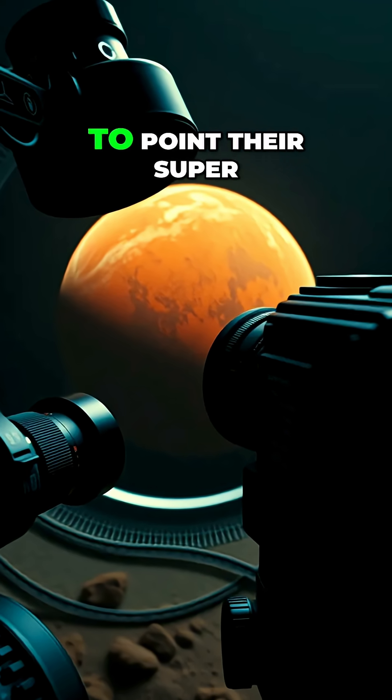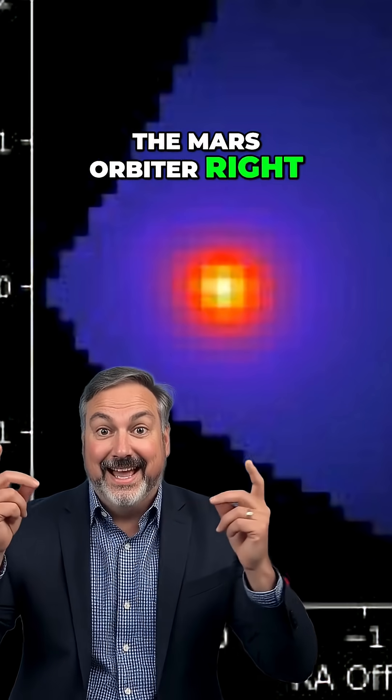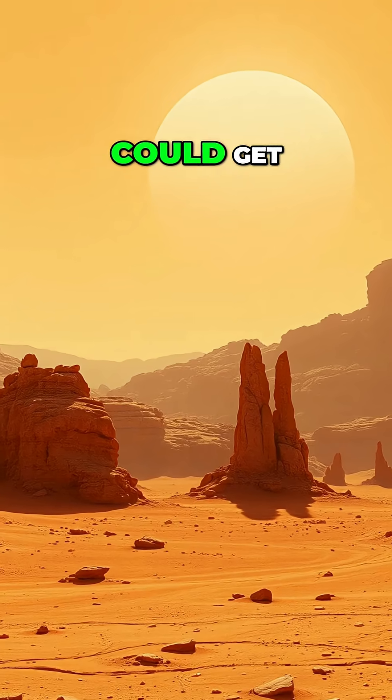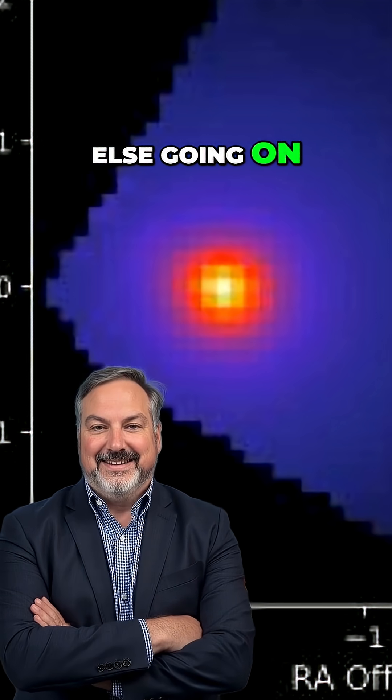He's actually pushing NASA to point their super powerful high-rise camera on the Mars orbiter right at it. Imagine the selfies we could get. He says it could show us if it's just a dusty rock, or if there's something else going on.